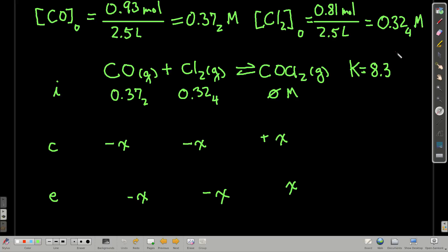And then this one is at equilibrium, how much do we have of everything? So it's going to be, at equilibrium, 0.372 molar minus X for carbon monoxide, 0.324 molar minus X for chlorine, and just X for our product.